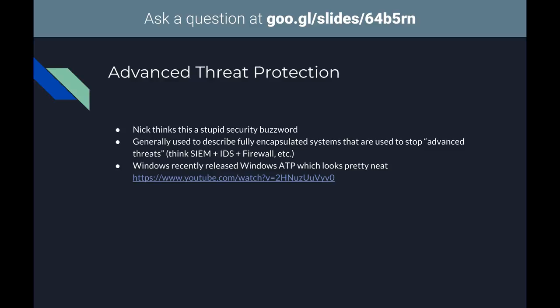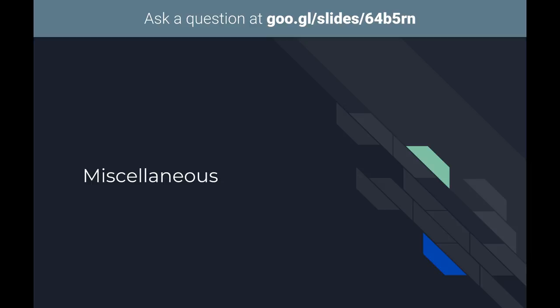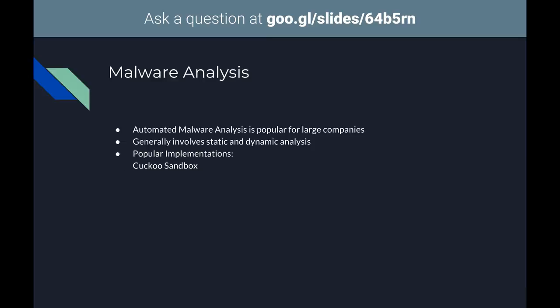We may talk more about that next week. On to miscellaneous things that didn't fit another category: malware analysis. Automated malware analysis is a really big thing — companies pay a lot of money for it because it lets you look at all binary executables coming into your network and evaluate them quickly without an analyst having to manually handle each one. A free solution is Cuckoo Sandbox — I haven't used it but I know people who really enjoy it. Corporate solutions include FireEye, which is really cool but costs a lot.